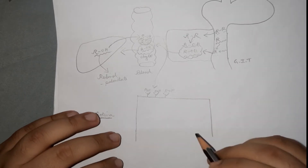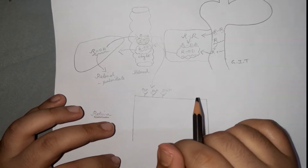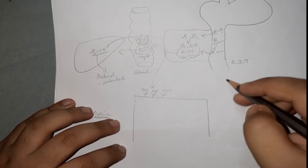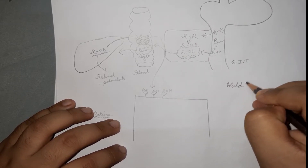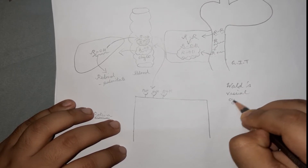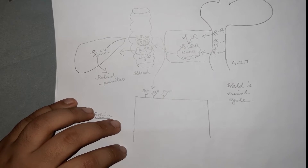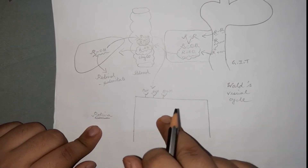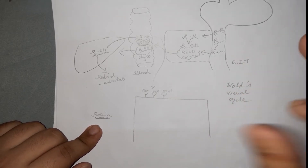In the retina, there is a cycle going on called Wald's visual cycle. I'm going to give you an overview here, and we'll talk about the Wald's visual cycle in more detail on the next page.